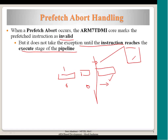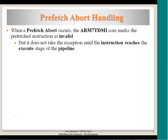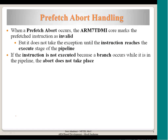The prefetch abort is not acted upon until the instruction reaches the execute stage. It is noticed at fetch, no action is taken at decode, and action is taken only at execute. If the instruction is not executed — because a branch occurs while it is in the pipeline — the abort does not take place. There is no need to raise an abort if the instruction is never actually needed for execution.